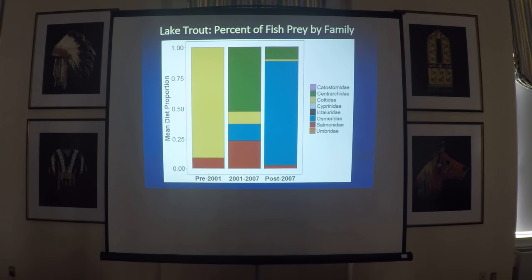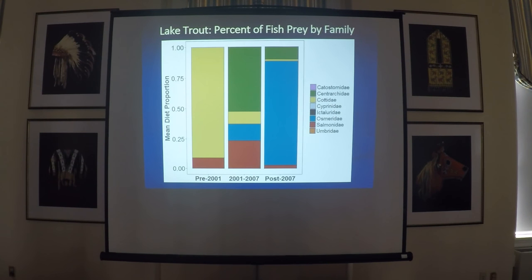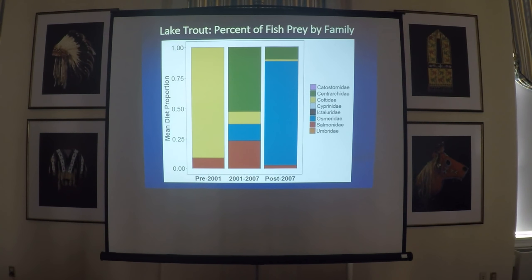Looking at the composition of fish in the lake trout diet, we see that prior to removal, cottids or slimy sculpins made up 90% of the fish eaten by lake trout, and salmonids made up the remaining 10%. Post-removal, we went from two families to four families represented in the fish prey of lake trout. We saw centrarchids, which were pumpkinseed and smallmouth bass, come into the lake trout diets, along with rainbow smelt — osmerids — and a large decline in the slimy sculpin contribution. Salmonids bumped up after removal started but then dropped post-2007.